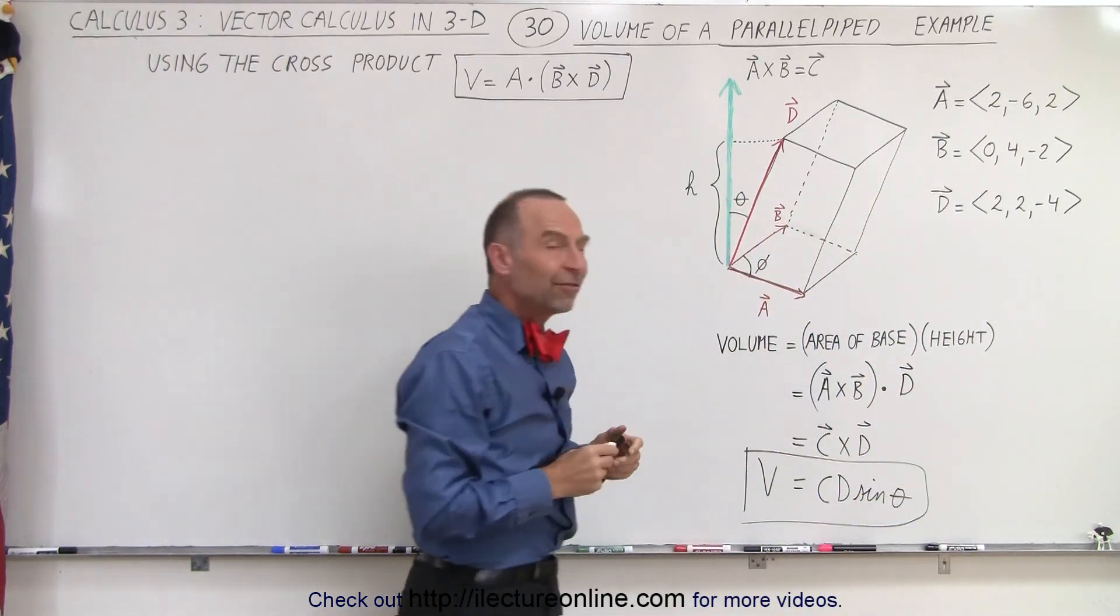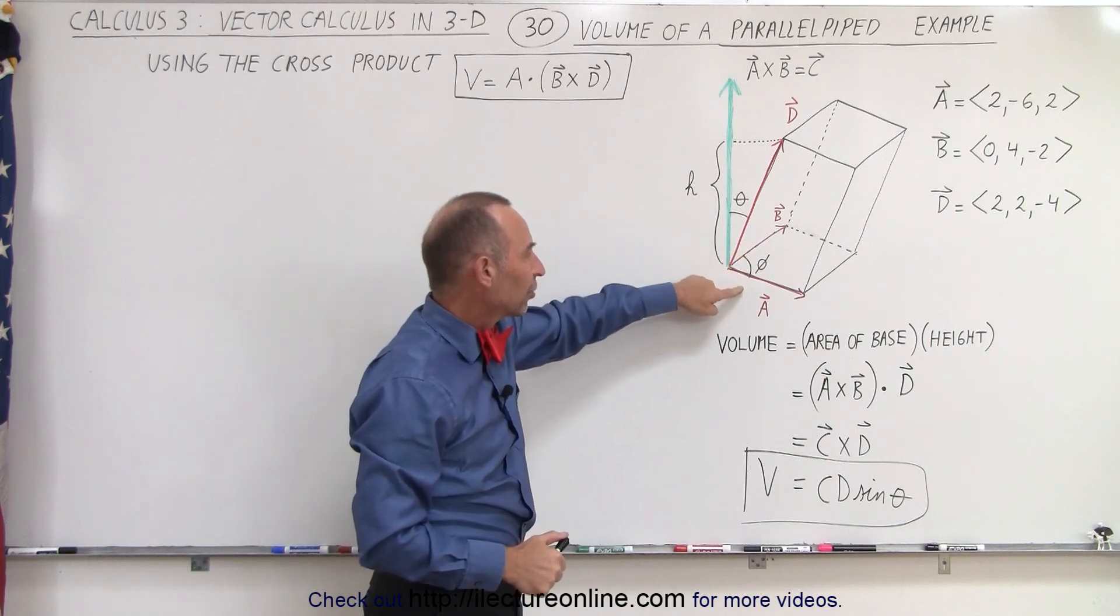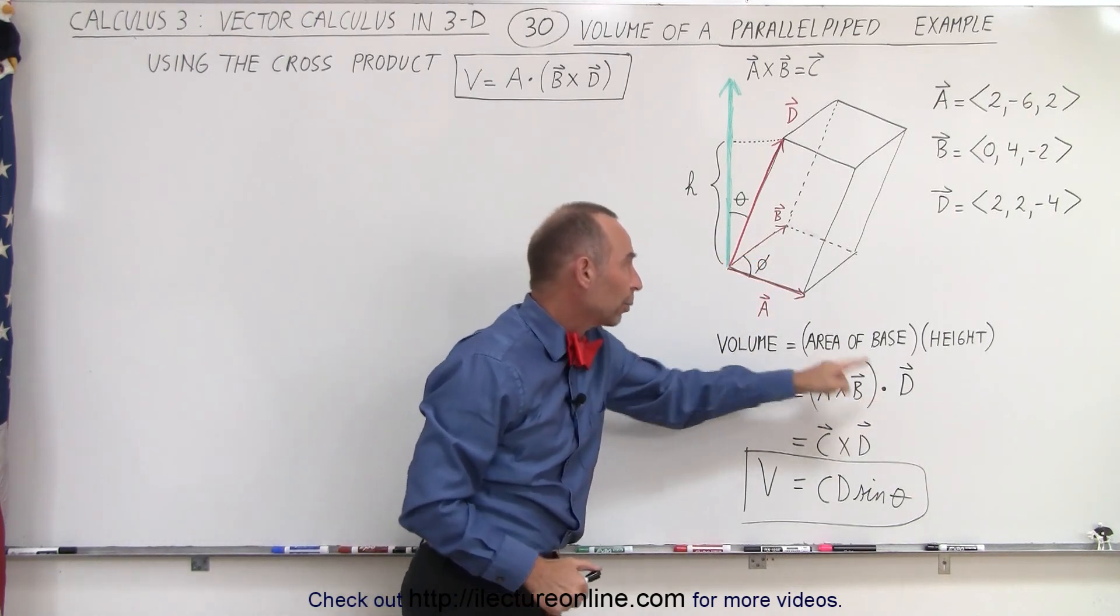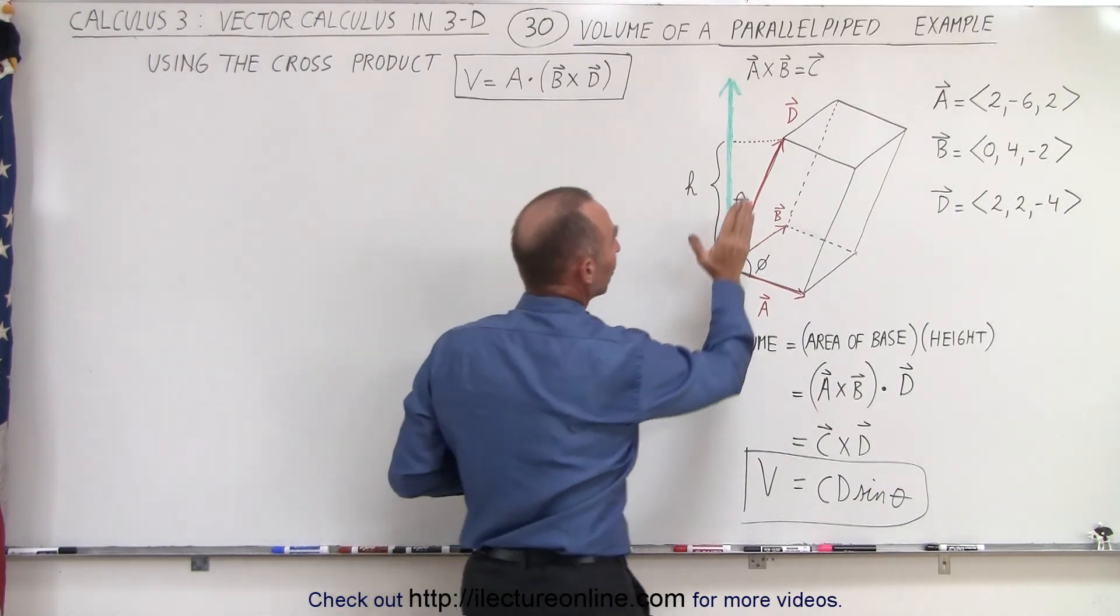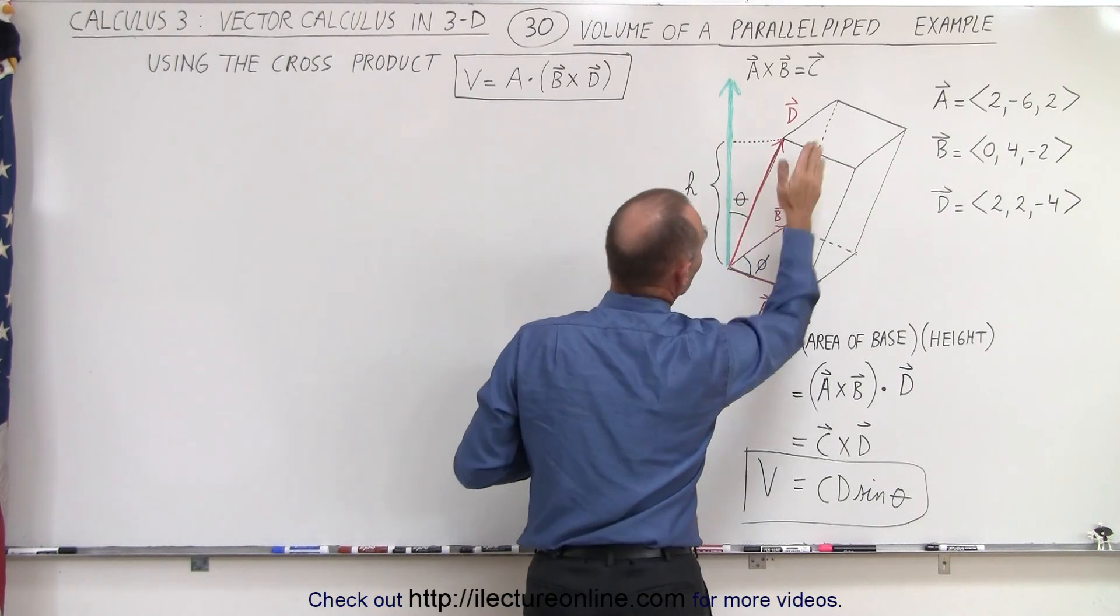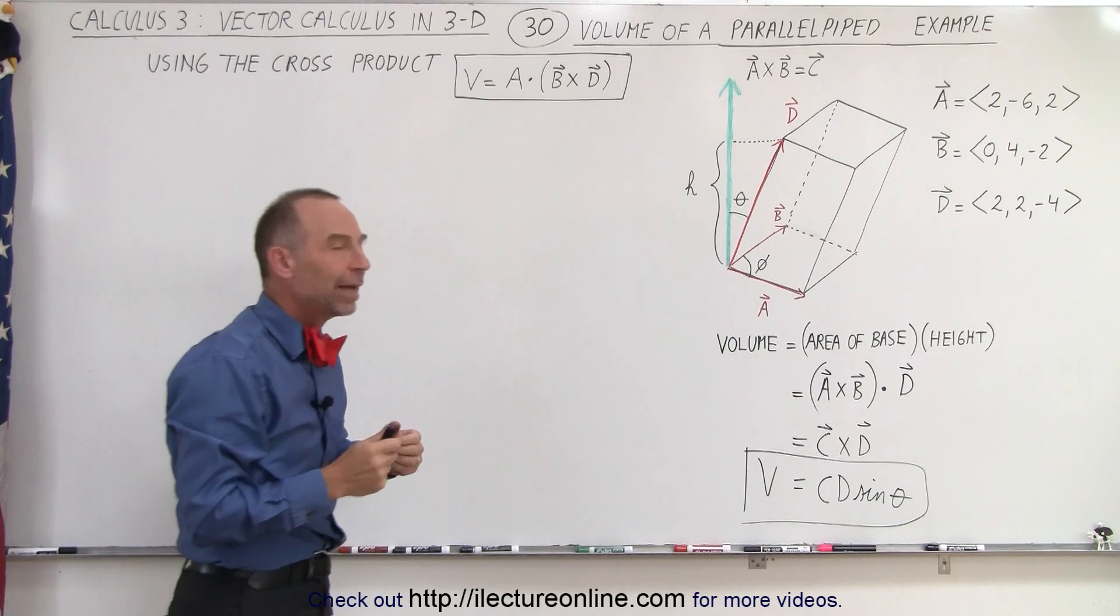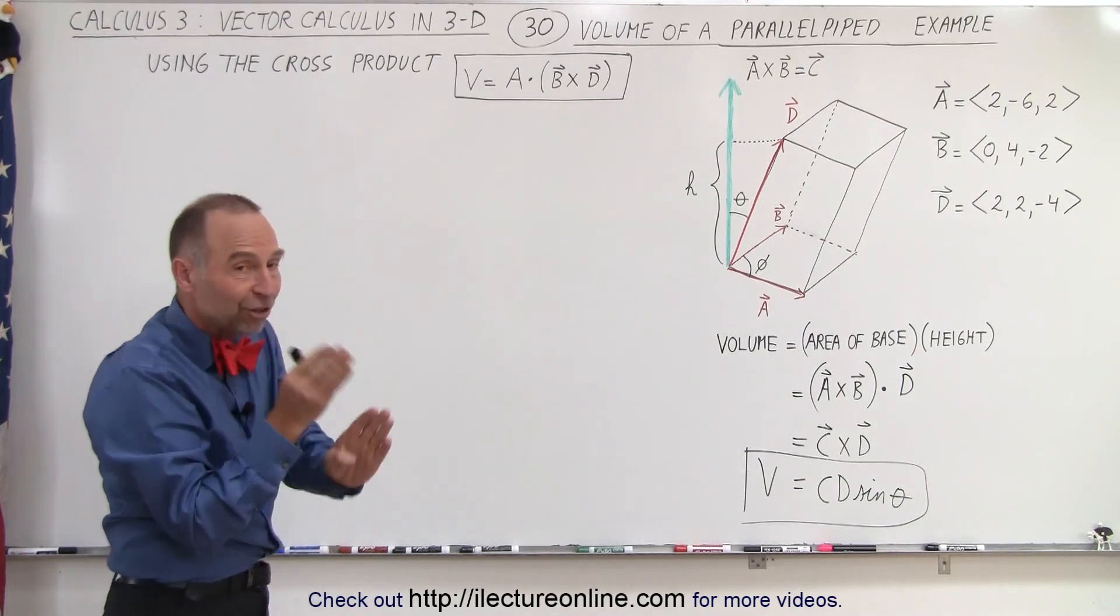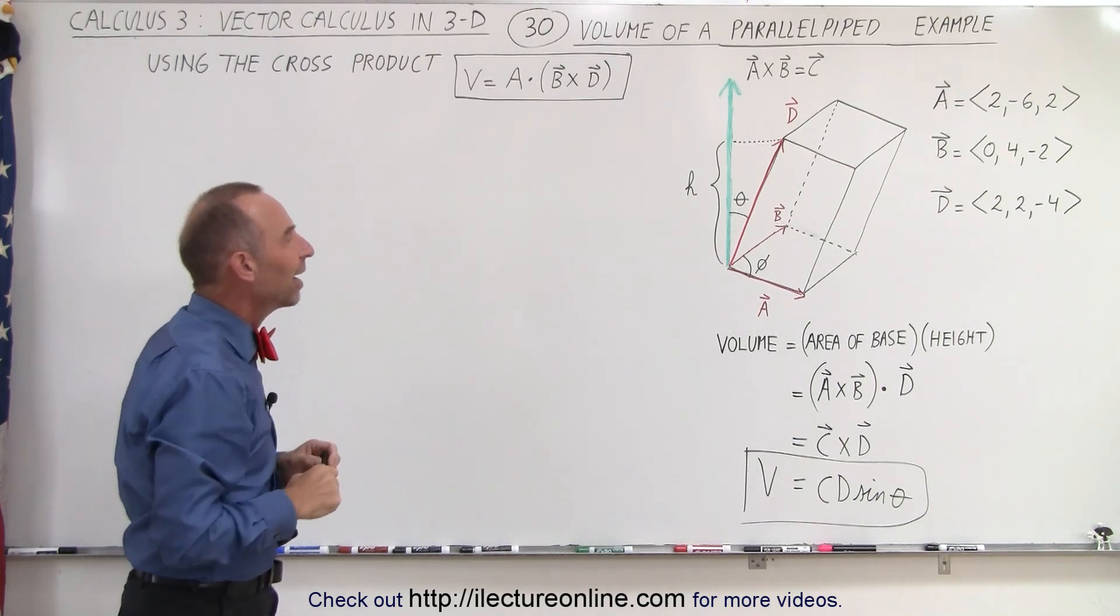Notice that even though we came up with an equation that says we're going to take the two vectors in the base and take the cross product and then dot it with the third vector, it really doesn't matter in which order you do it. You can call any side of the parallelepiped the base, and then the other third side the height, or at least the projection onto the perpendicular to the base as the height.